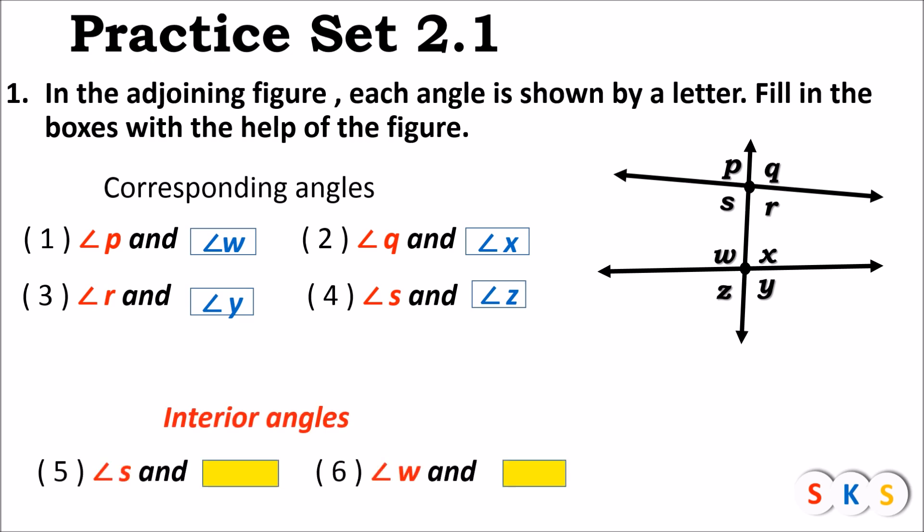Now we have the next part: interior angles. Angle S and dash, angle W and dash. We will try to understand interior angles in this figure. The word 'interior' means inside. So angles which lie inside the parallel lines — in this figure, angle S, angle W, angle R, and angle X are inside the parallel lines, and those angles form pairs of interior angles. Angle S and angle W is one pair of interior angles.